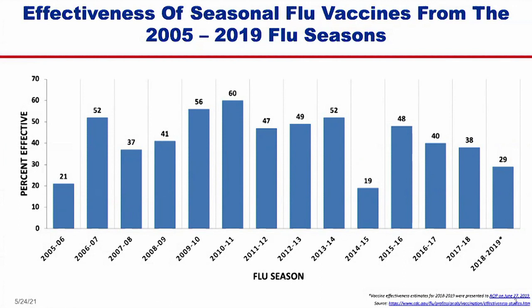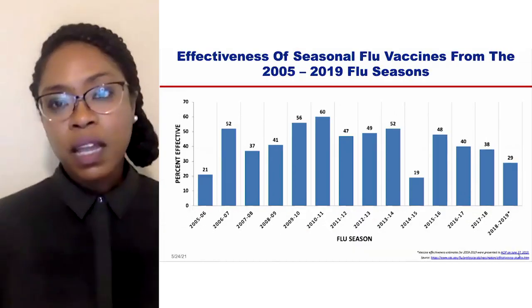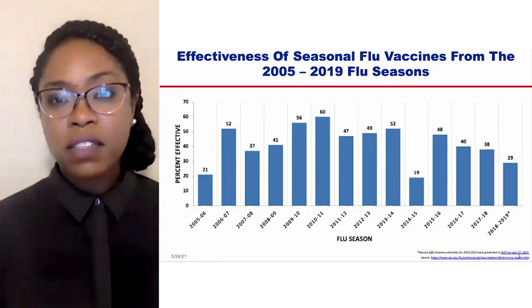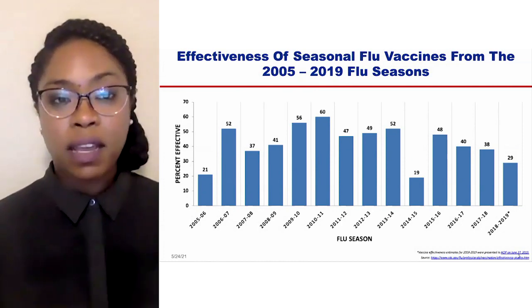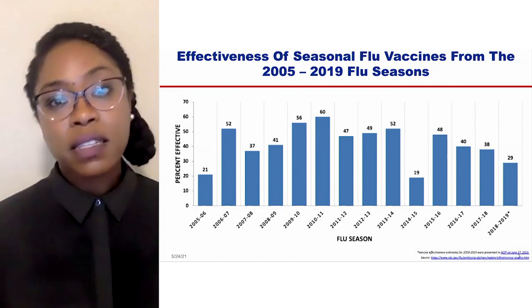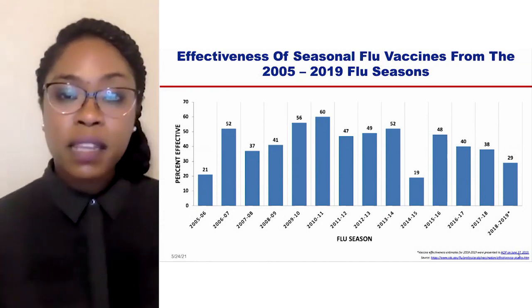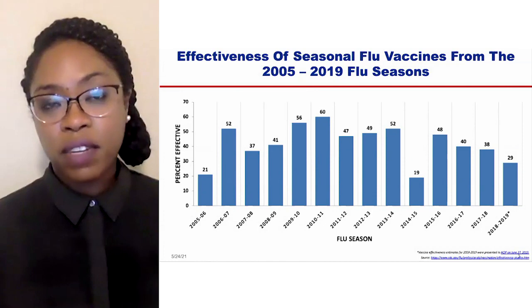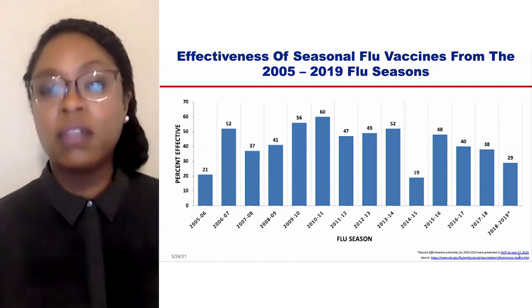This is the most recent graph of the effectiveness of the seasonal influenza vaccines delivered to date. This graph comes from the CDC website — on the Y axis we have percent effectiveness, on the X axis the flu seasons over the last 15 years, with the most recent data available being 2019. The effectiveness of those vaccines has varied from as low as 19% in 2014 to as high as 60% in 2010, and 60% is really the highest we've ever seen for current seasonal vaccines.